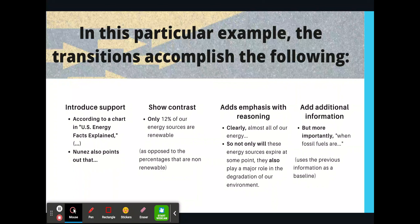Naturally, you'll want to add a transition there. The transitions also show contrast. You could see where 'only 12% of our energy sources are renewable' — the word 'only' shows opposition to the percentages that are non-renewable, so it shows contrast between those two. The word 'only' is the one that signifies the value there. Transitions also add emphasis with reasoning. You could see where it says 'clearly, almost all of our energy...' and 'so not only will these energy sources expire at some point, they also play a major role in the degradation of our environment.' Those little words and phrases help the audience understand how to read your sentence and with what meaning to give it.